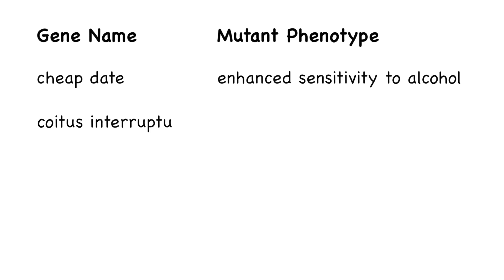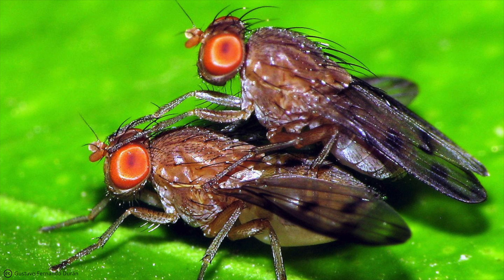Next, there's coitus interruptus. Mutations in this gene cause a reduction in copulation time. So normally, copulation lasts for about 15 to 20 minutes in Drosophila. But males with a coitus interruptus mutation finish copulation prematurely. And while we're on the subject of fruit fly mating, I should add that there's also a gene named stuck. You can look it up if you don't believe me. And you can probably guess what that phenotype is.